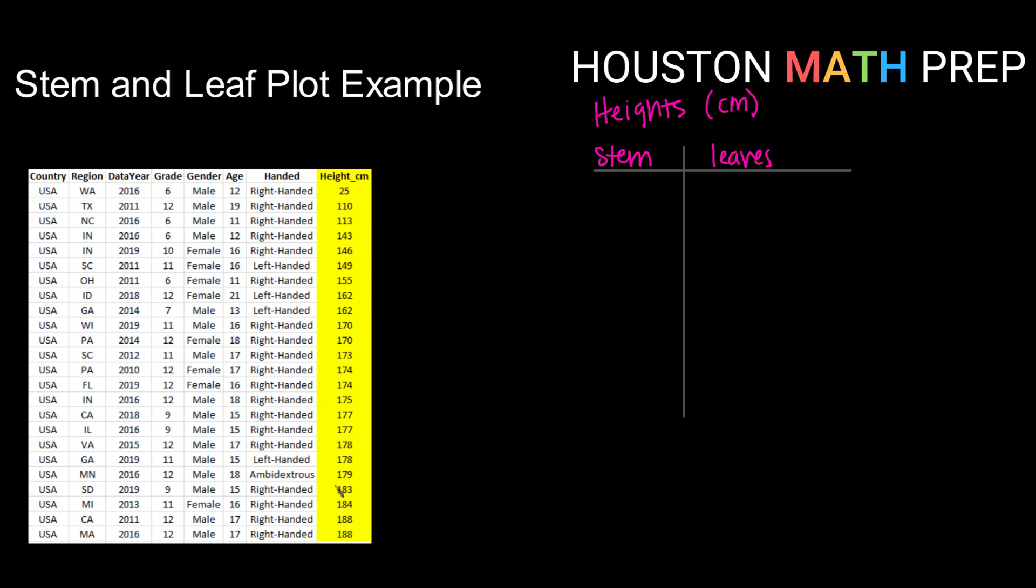So looking at my data, most of them are three digits. So I think that it would be best if I chose the first two, so 11, to be my stem with a zero and use that as my key to show that that is 110.